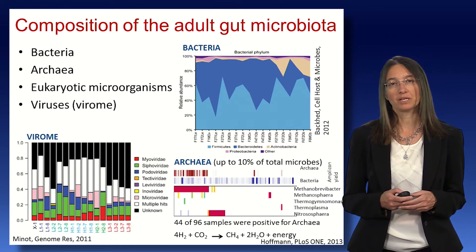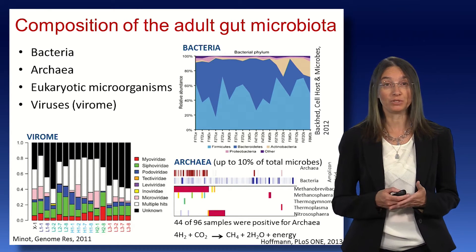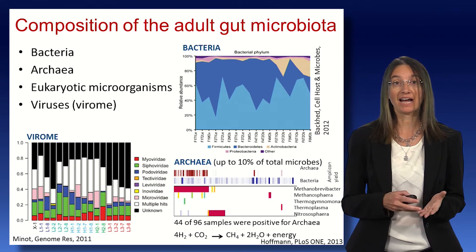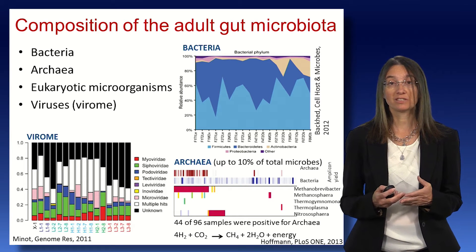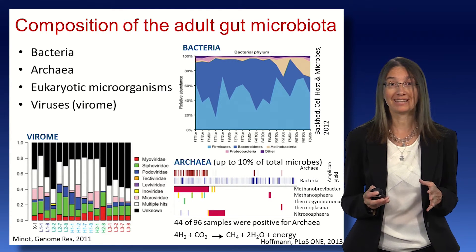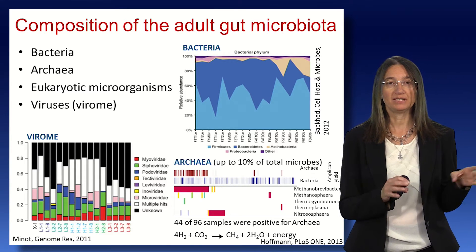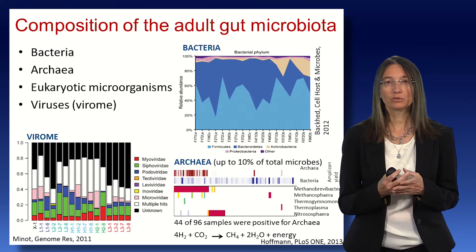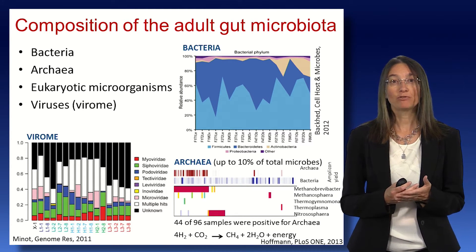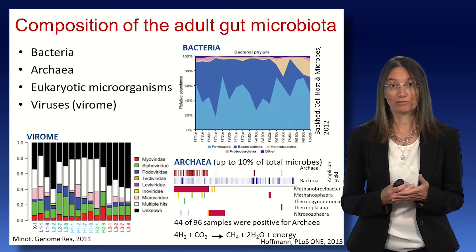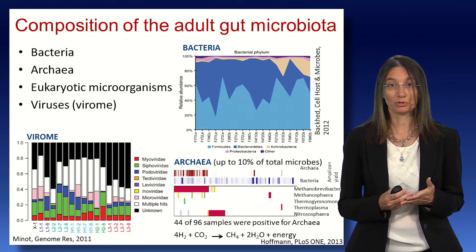What is remarkable about this gut microbiota is that it comprises microorganisms from the three domains of life, including bacteria, archaea, and eukaryotic microorganisms, as well as viruses. These figures are meant to give you an idea of the composition of the bacterial microbiota, the archaea community, and the virome. The bacterial community is mainly represented by four dominant phyla illustrated by four different colours: the Firmicutes, the Bacteroidetes, the Actinobacteria, and the Proteobacteria.